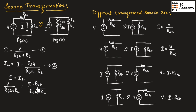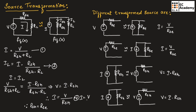If we equate the numerators, we can write V is equal to I multiplied by RSH. Therefore, I will be equal to V divided by RSH. Since RSH is the same as RSE, we can write the same equation as I is equal to V divided by RSE.